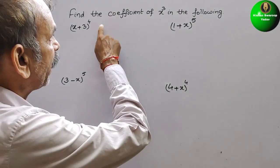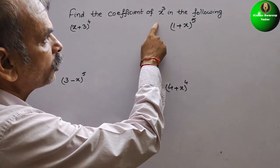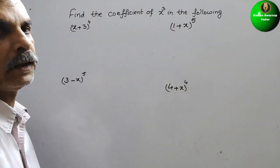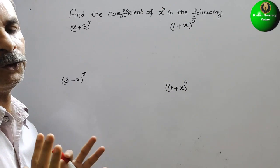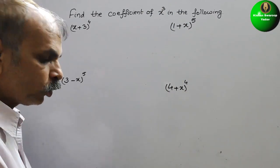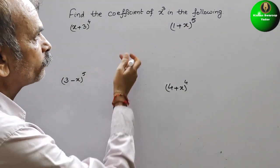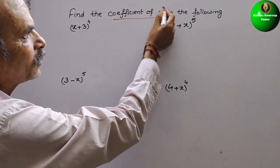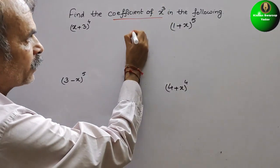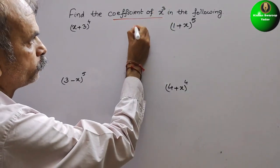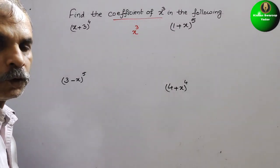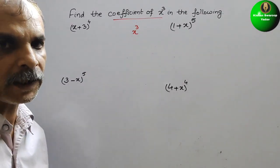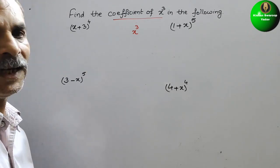Your question is to find the coefficient of x cube in the following. See how we will do it. So here they have told you to find out the coefficient of x cube. So here what we have to take — we have to take the combination.